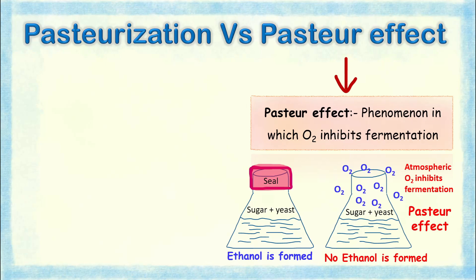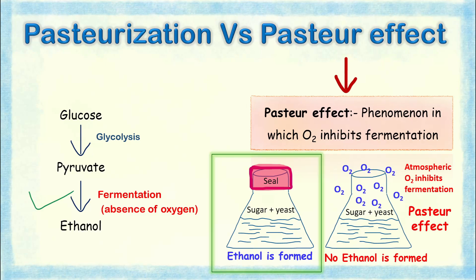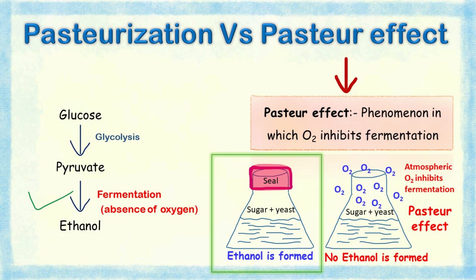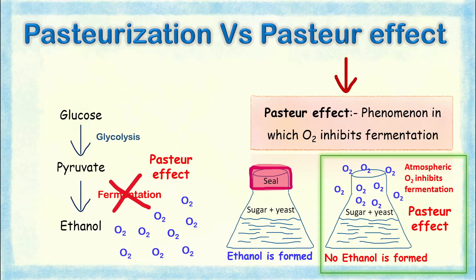Fermentation is a process in which pyruvate is converted into alcohol, and this reaction happens in the absence of oxygen. Now if oxygen is present, then the fermentation process is inhibited. This phenomenon where oxygen inhibits fermentation is known as the Pasteur effect.